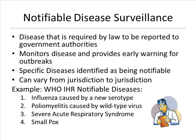Slide 26: Notifiable disease surveillance includes diseases that are required by law to be reported to government authorities — these diseases are identified as being notifiable. This system monitors disease and provides early warning for outbreaks. It can vary from jurisdiction to jurisdiction. WHO International Health Regulations notifiable diseases include influenza caused by a new serotype, poliomyelitis caused by wild-type virus, severe acute respiratory syndrome, and smallpox.